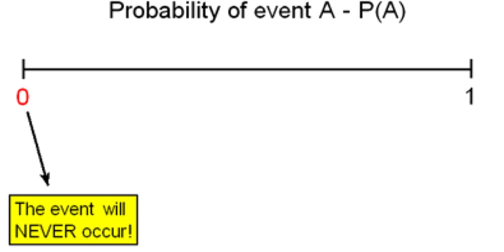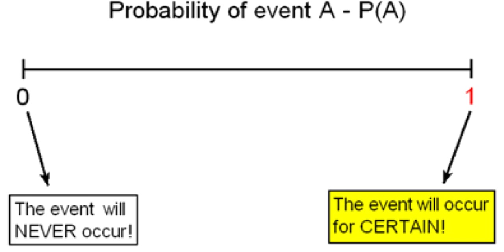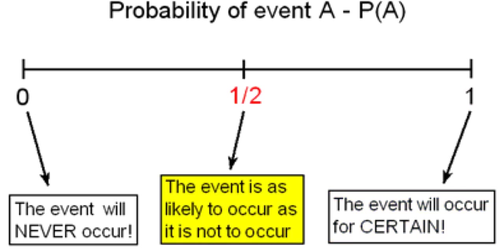An event has probability 1 if it will occur for certain. In the middle, a probability of 1/2 indicates that the event has a 50% chance of happening. In other words, the event is as likely to occur as it is not to occur.